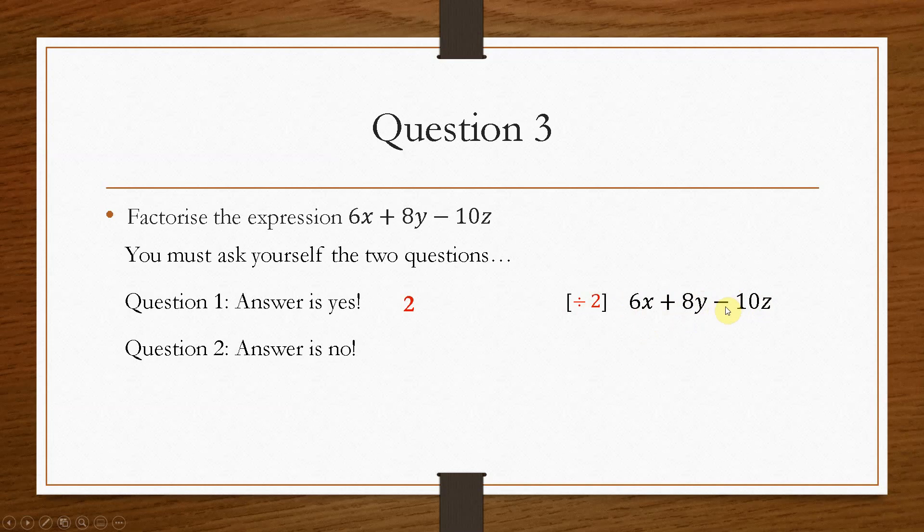and remember that it is negative 10xz. So you will need to—you can't lose the minus. A lot of students like to forget about the minus, and pop a plus sign in there. So your final answer becomes 2, brackets 3x, plus 4y, minus 5z.